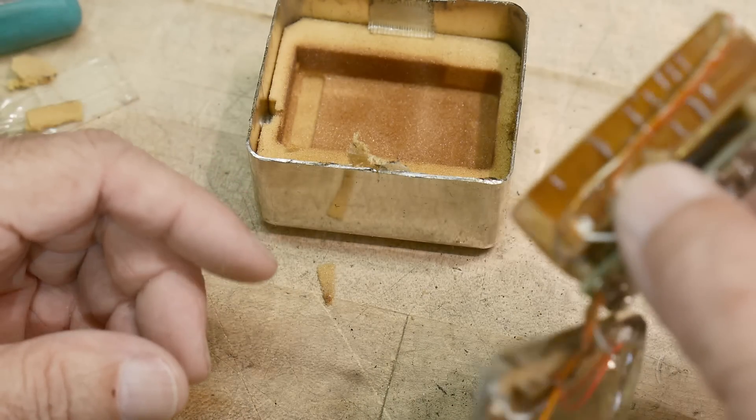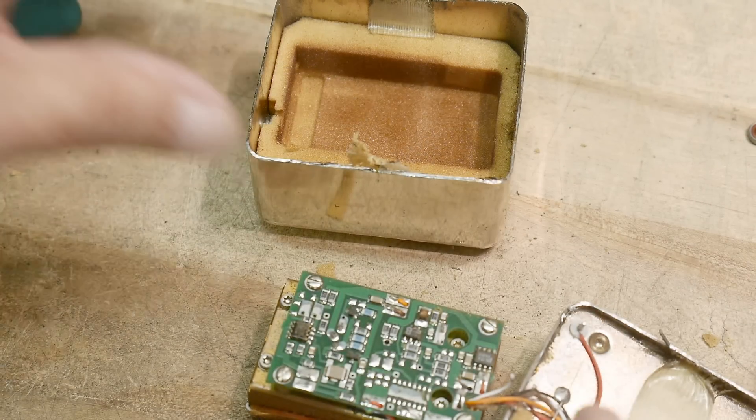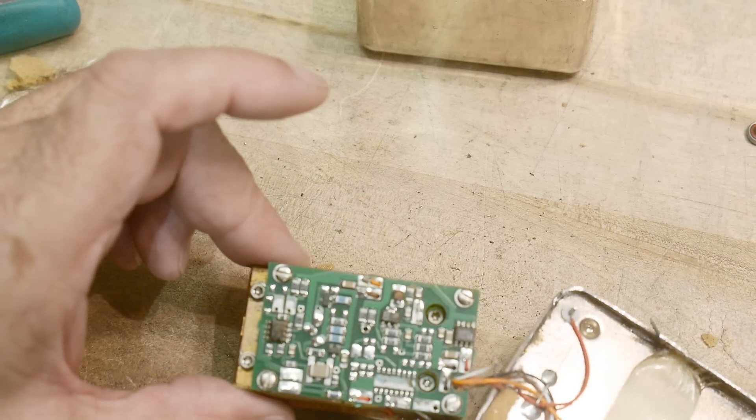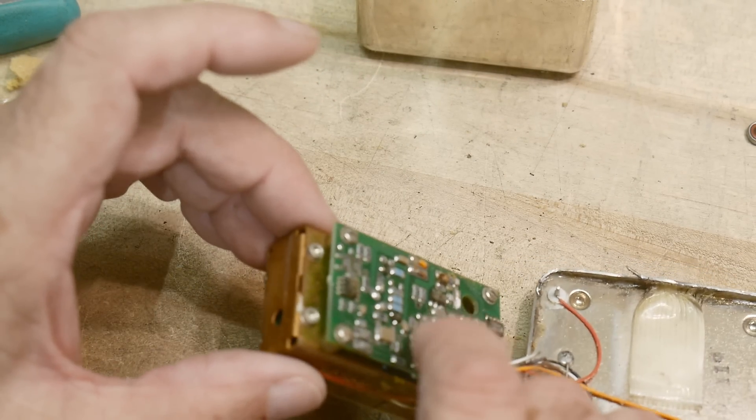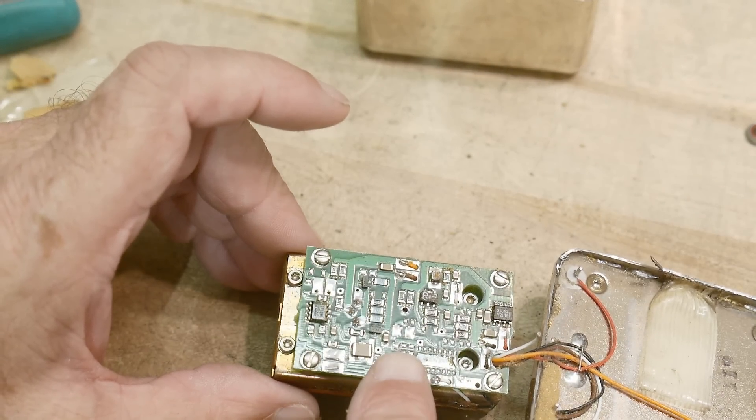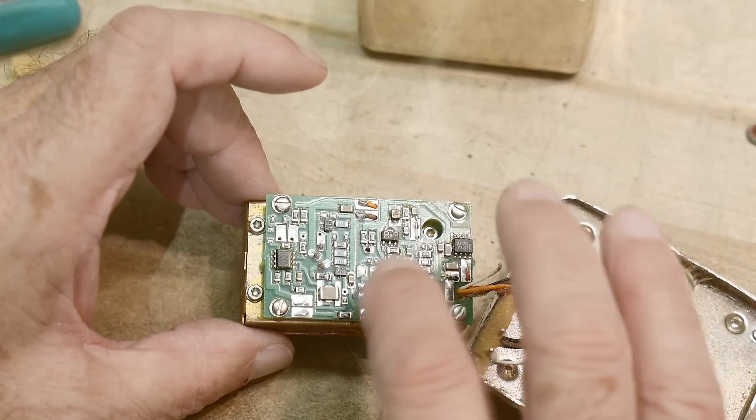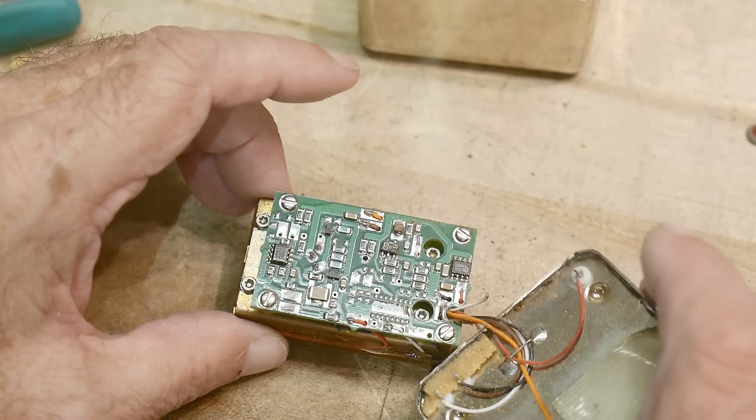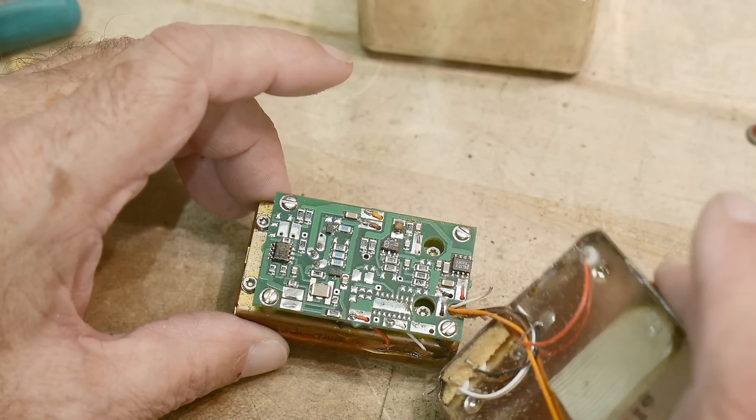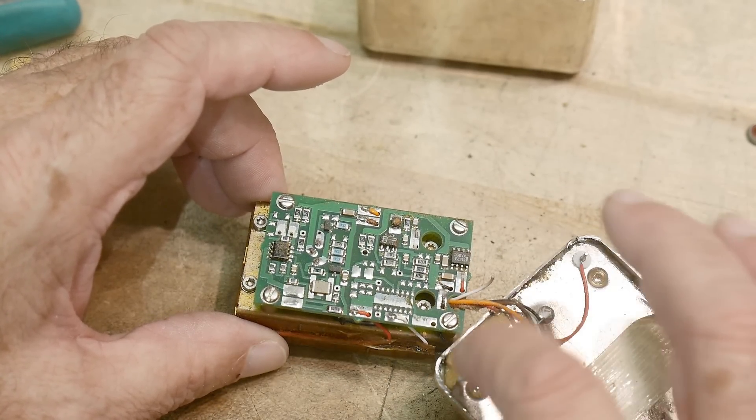All right, so I'm always amazed these things are much more complicated than you think they are inside. This circuitry might be just for temperature regulation, just to make sure the temperature's okay. I've got a wire broken off there, but that's okay, it's the white wire.